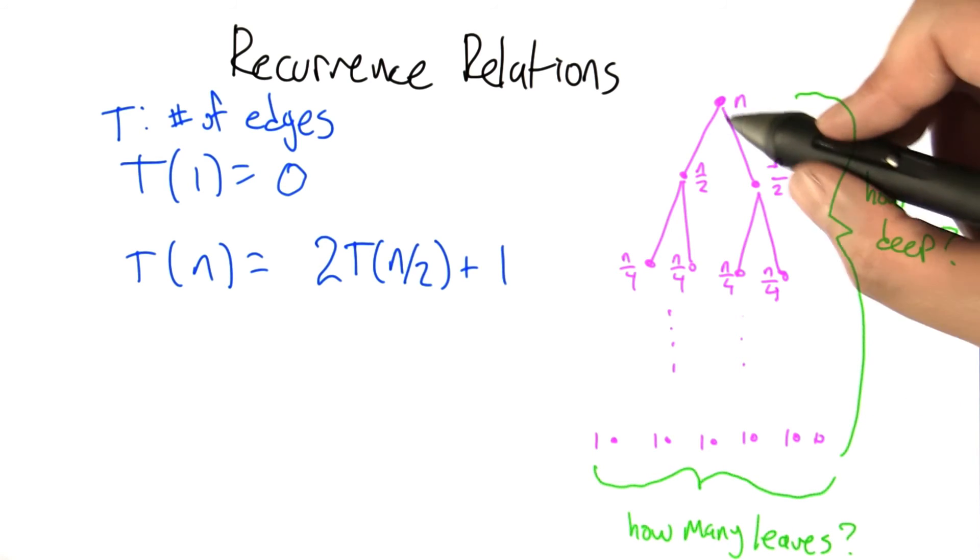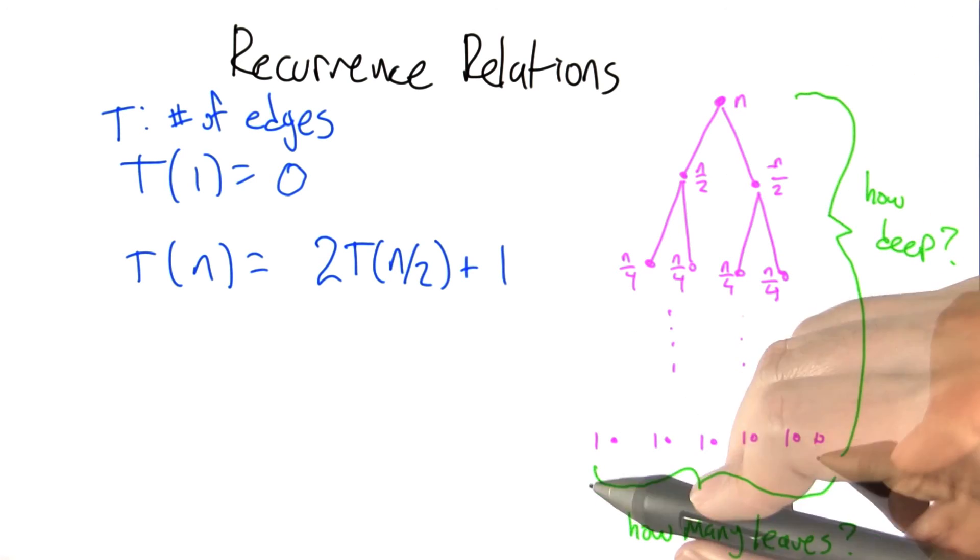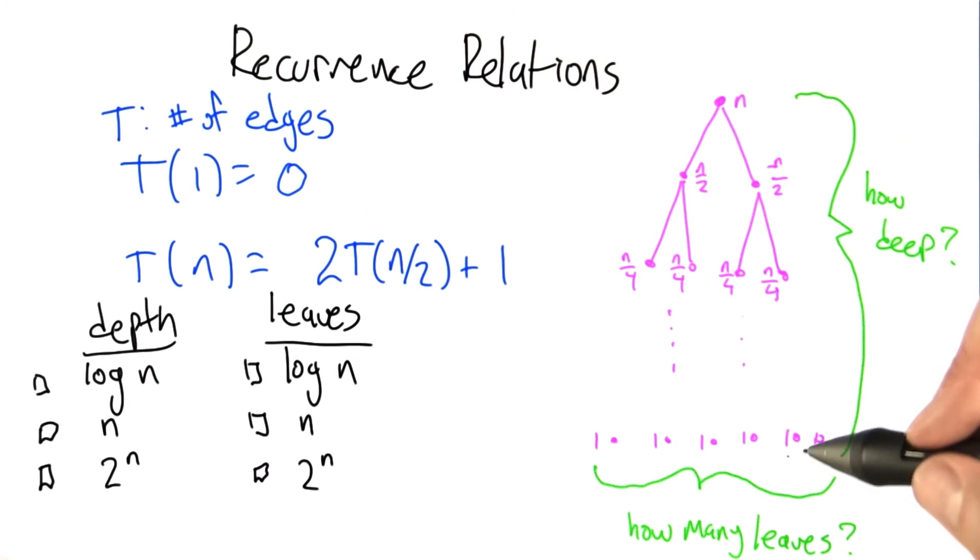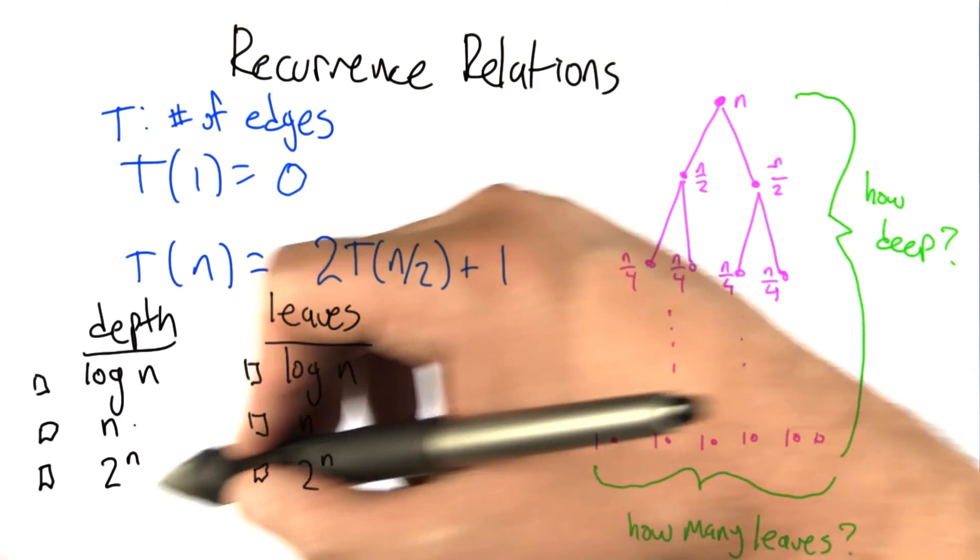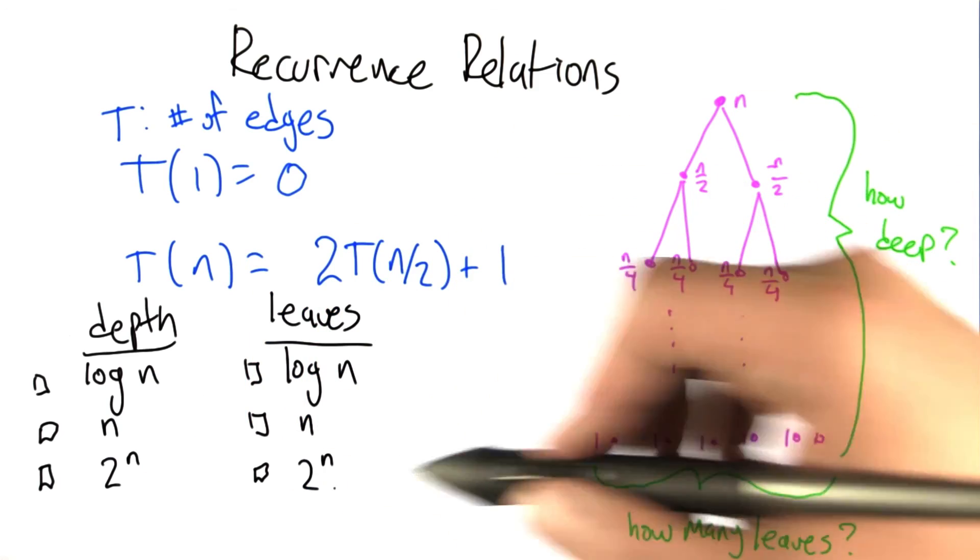Two useful questions. First question is, how deep is this tree that's being built here that bottoms out over here with the ones, and how many leaves is it going to have? So why don't you fill that in. Is the depth that we get this way log n, n, or 2 to the n? And are the number of leaves at the bottom log n, n, or 2 to the n?